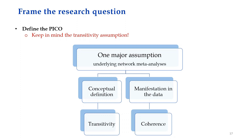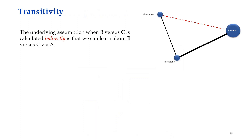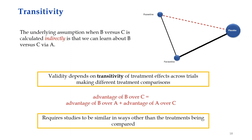Regarding what transitivity means: consider the three-treatment loop. The underlying assumption of transitivity says that it is valid to calculate B versus C through A. The validity of network meta-analysis depends on transitivity, and in mathematical form, it means that the advantage of B over C equals the advantage of B over A plus the advantage of A over C.